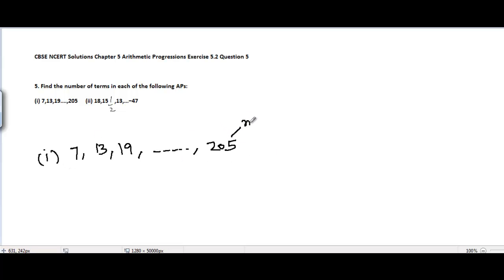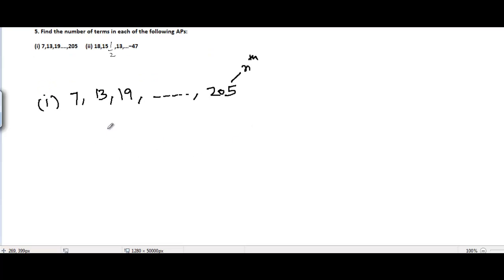The last term here, this nth term is 205. We need to find n here basically. If we get the value of n, then we will know how many terms are there in this arithmetic progression. Let's start with the solution.